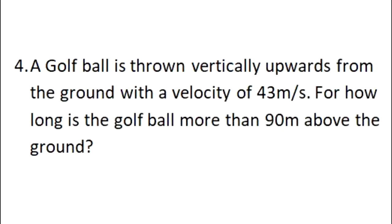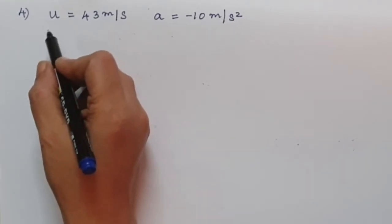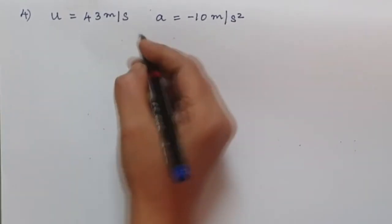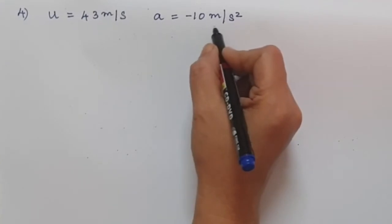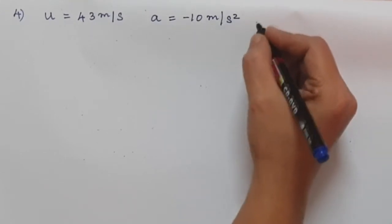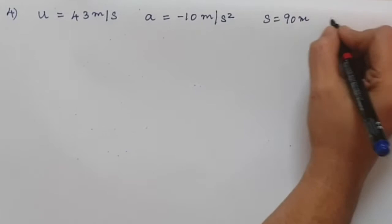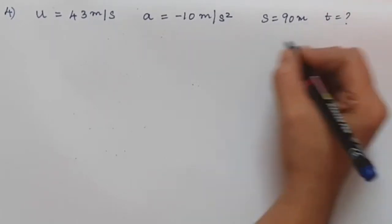The fourth question: a golf ball is thrown vertically upwards from the ground with a velocity of 43 m/s. For how long is the golf ball more than 90 metres above the ground? Given: u = 43 m/s, a = −10 m/s² (thrown upward), and s = 90 metres. We need to find the value of time.